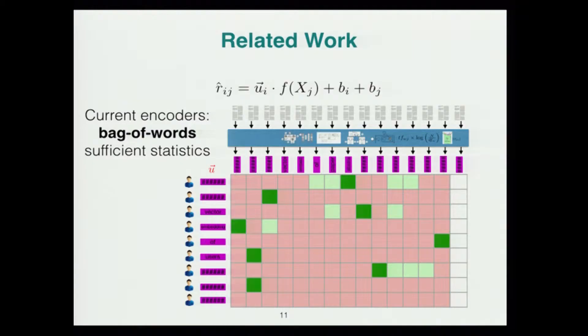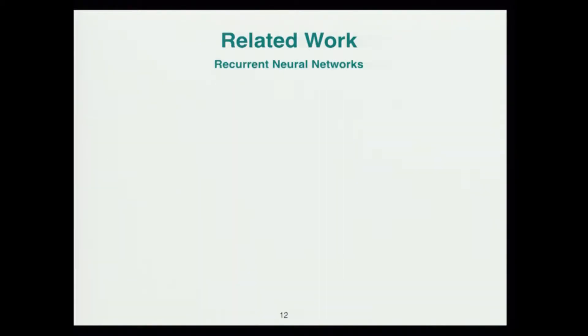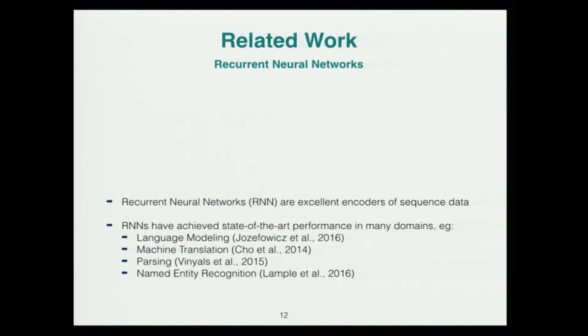Most of the work for hybrid recommendation in this area is based on models which leverage bag of words sufficient statistics. What we do here instead is look at deep learning-based models for learning feature representations sensitive to the order of words in the text. For this, we look into recurrent neural networks, which are deep learning models that are excellent encoders of sequential data and have achieved state-of-the-art results in language modeling, machine translation, parsing, and named entity recognition.